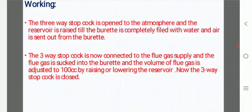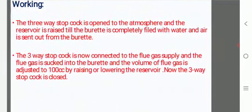The three-way stopcock is now connected to the flue gas supply and the flue gas is sucked into the burette and the volume of flue gas is adjusted to 100 cc by raising or lowering the reservoir. Now the three-way stopcock is closed.